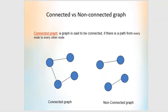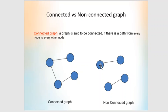Next is connected and non-connected graphs. A graph is said to be connected if there is a path from every node to every other node — that is, you can traverse through other nodes and reach every other node in the graph. If you cannot reach a particular node from another node, the graph is not a connected graph.